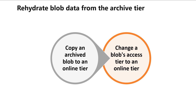There are two options for rehydrating a blob stored in the archive tier. The first option is to copy an archived blob to the online tier. You can rehydrate an archived blob by copying it into a new blob in the hot or cool tier using the Copy Blob from URL operation. Microsoft recommends this option for most scenarios.